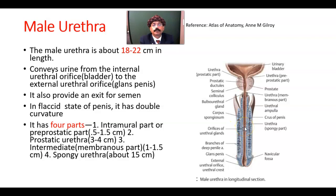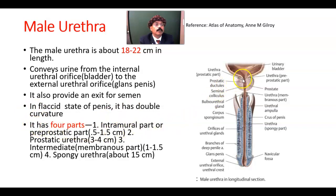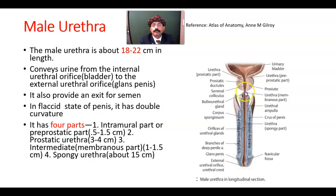It also provides an exit for semen during ejaculation. In the flaccid state of the penis, it has a double curvature. It has four parts: the intramural part, the prostatic part, the intermediate or membranous part, and the spongy part, also called the penile urethra.